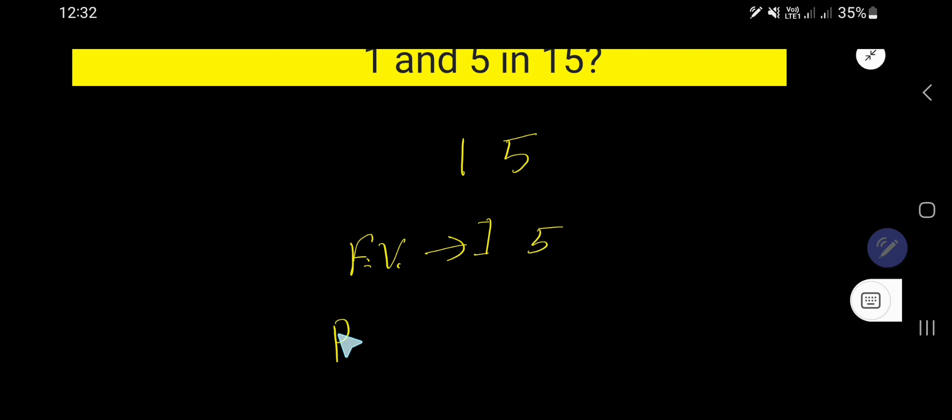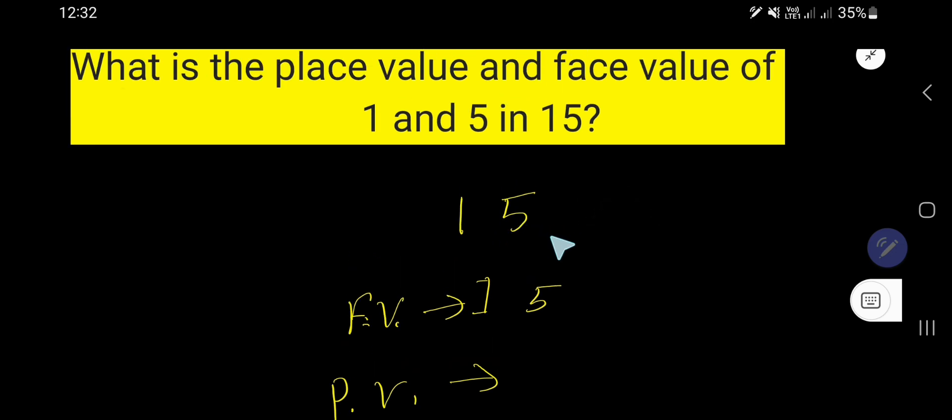So, place value. In case of place value, look, the place value of 5 is face value of 5 times the position of 5 in this number. The position of 5 in this number is in 1's place. That is 10 to the power 0 place.